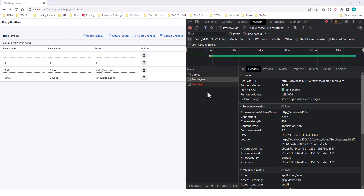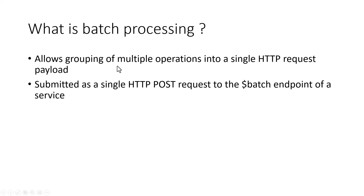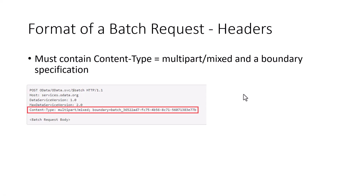So if I go to my slide deck, this is how batch processing works in OData Service. Batch processing allows you to group multiple operations into a single HTTP request. It is sent as a POST request — that's important to know. The dollar batch is the endpoint, and within the payload is where we specify which entity set to target.